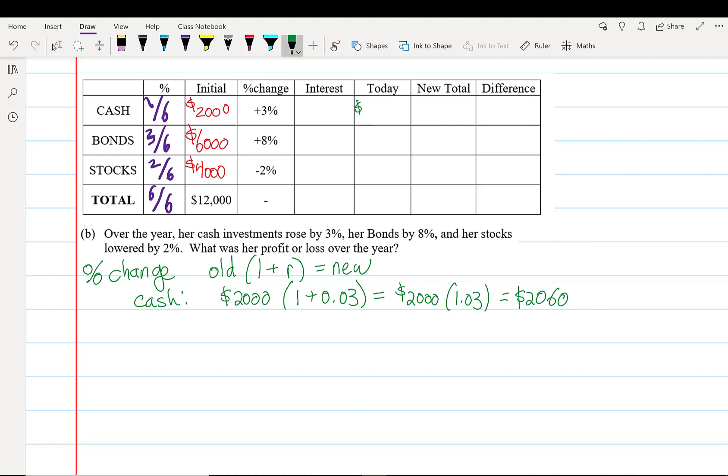Another way to do that would be to find the interest, which would just be $2,000 × 0.03 = $60. So we put $60 in here. For bonds, let's do the interest instead: $6,000 × 0.08 = $480.